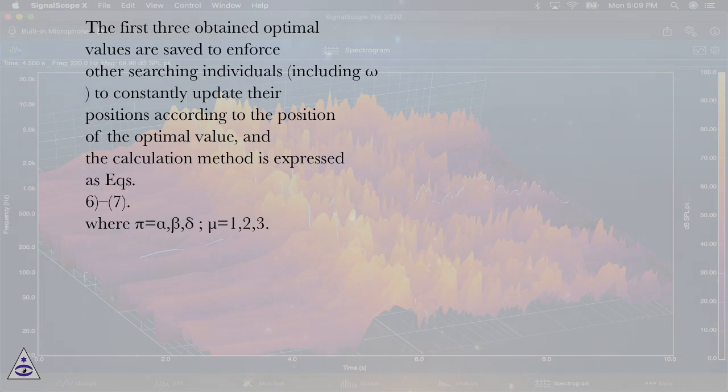Where pi equals alpha, beta, delta, and mu equals 1, 2, 3.